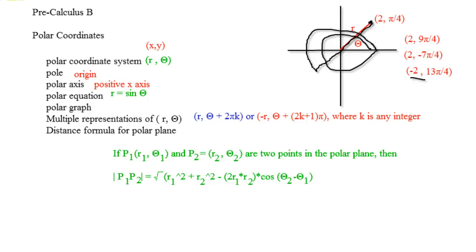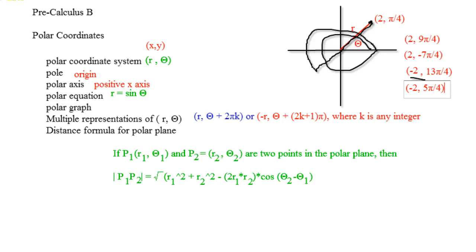If we did k equals 0 and added just π, we'd get (−2, π/4 + π) = (−2, 5π/4). That would get you to the same spot — you go around this way to the opposite side, and then the negative radius brings you back here.